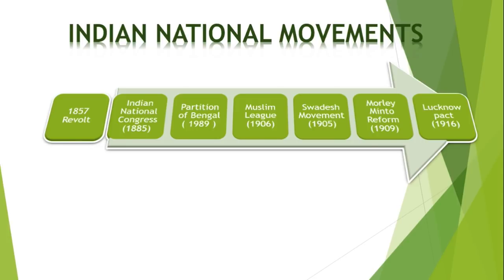The next was the Lucknow Pact, 1916. An important step forward in achieving Hindu-Muslim unity was the Lucknow Pact of 1916. During the war between the British and Turkey, the anti-British feeling growing among Muslims opened a way for Congress and Muslim League unity.